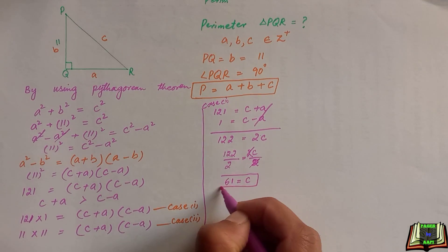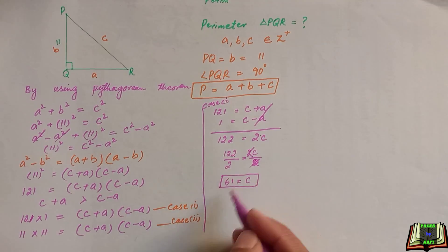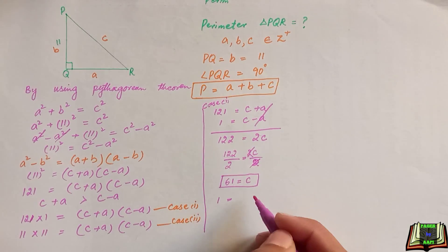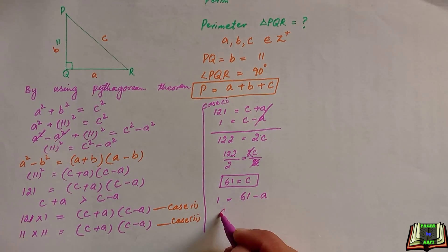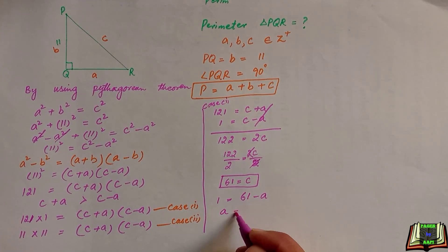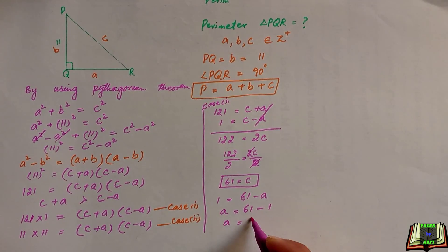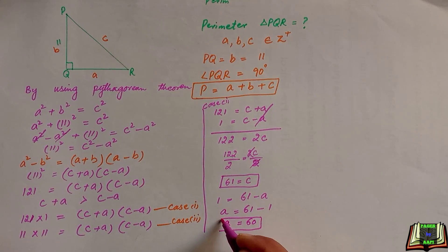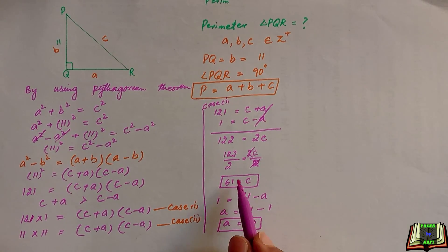So we got the value of C which is equal to 61. Now by putting this value of C into the equation: 1 equals 61 minus A, so A equals 61 minus 1, which gives A equals 60. It means we also got the value of A. From Case 1 we have the values of A, B, and C.